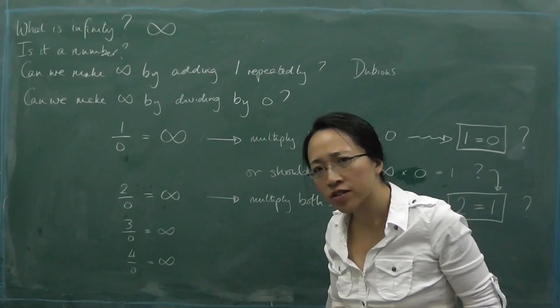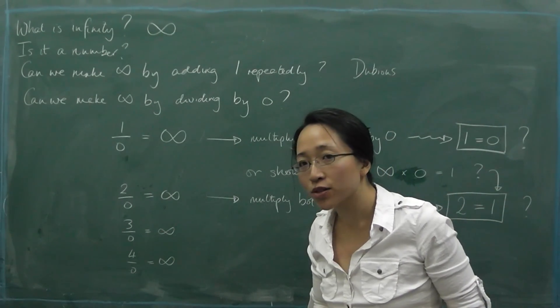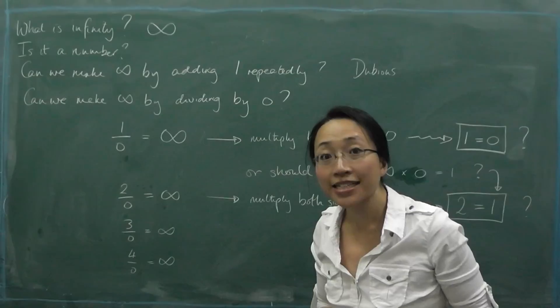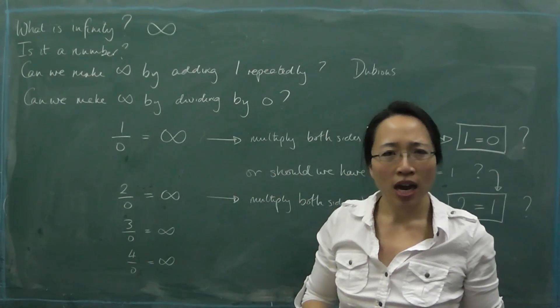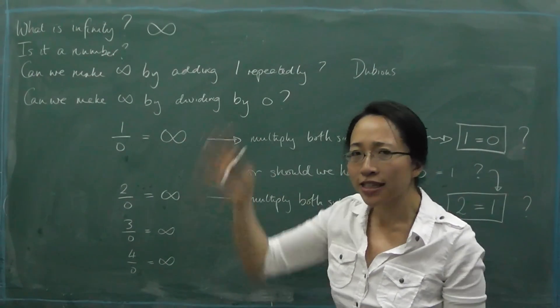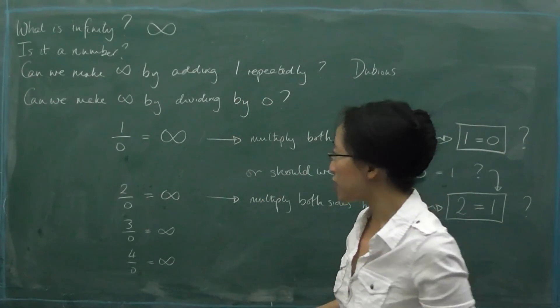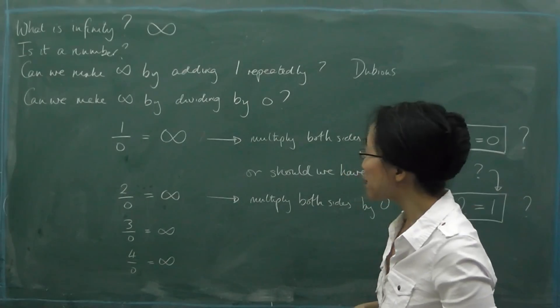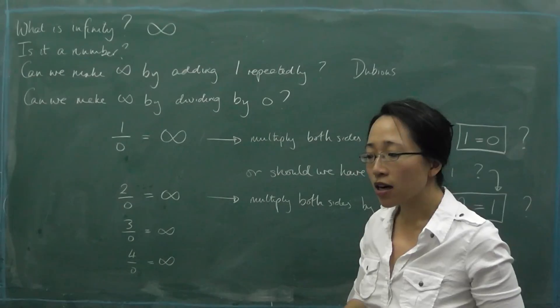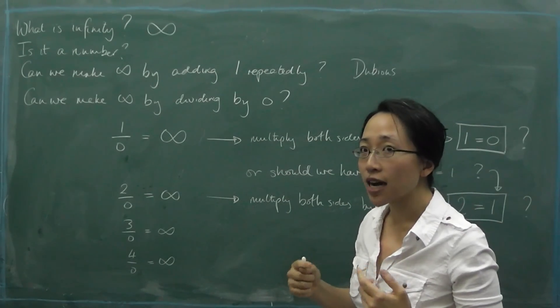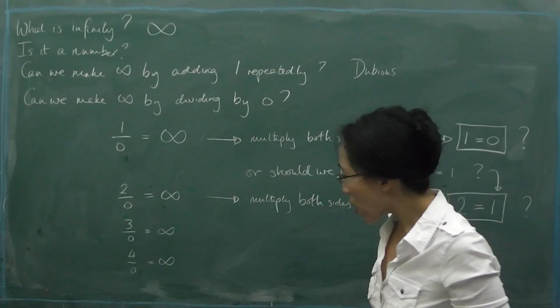Right, we've seen some things that go wrong if we try and use infinity like a number. Let's do some more of them. I think this is fun. It's like when children like building towers up with blocks just in order to knock them down. And this is basically what we're doing. We're going to build up another tower which is trying to be infinity and knock it down. Crash.